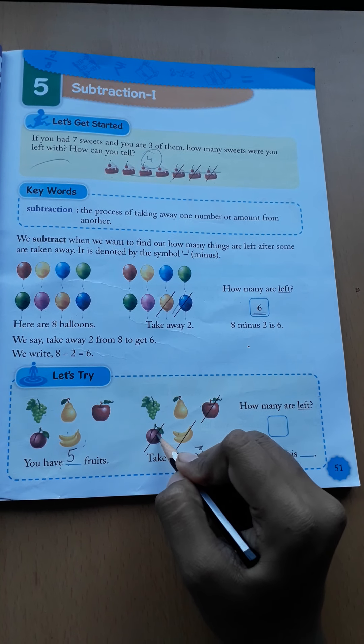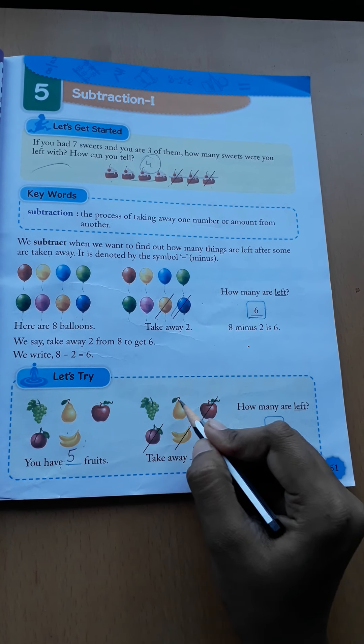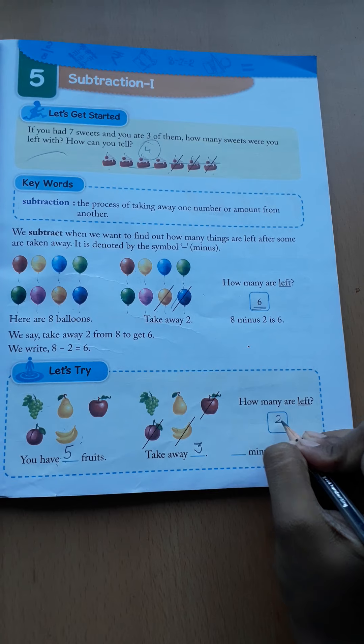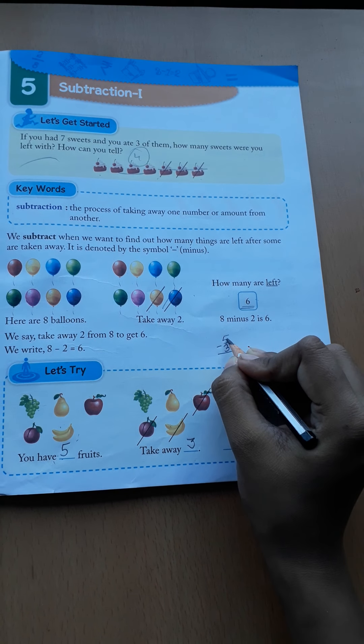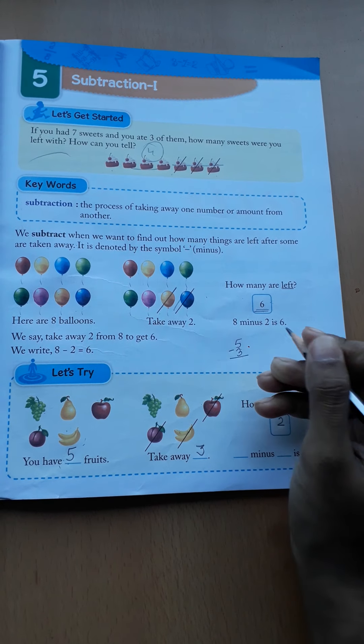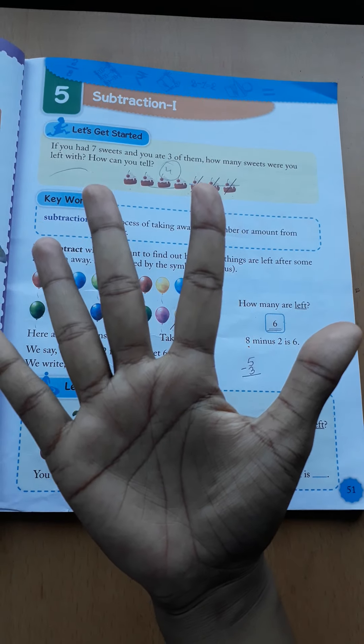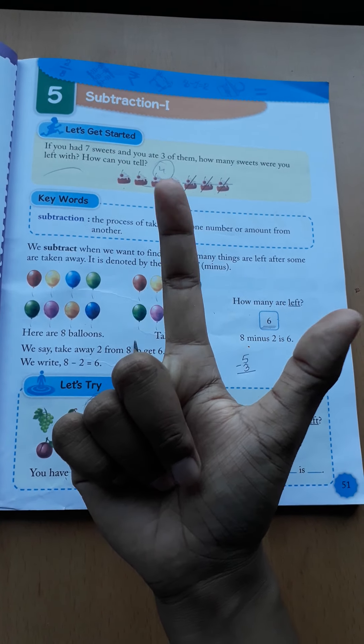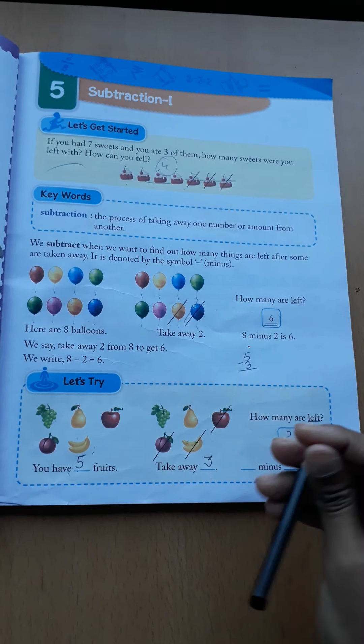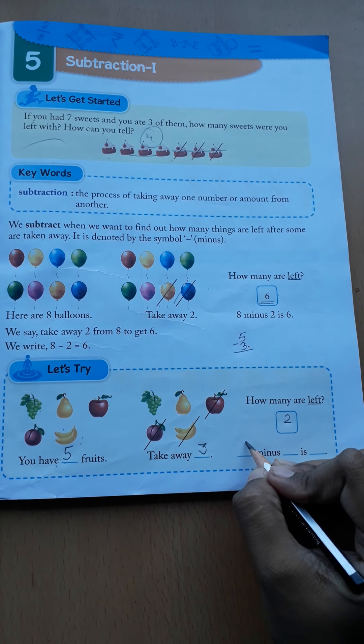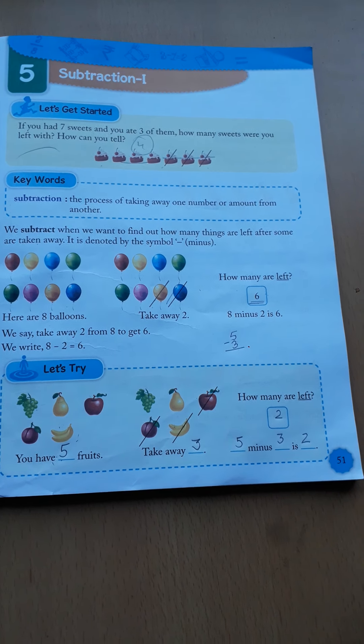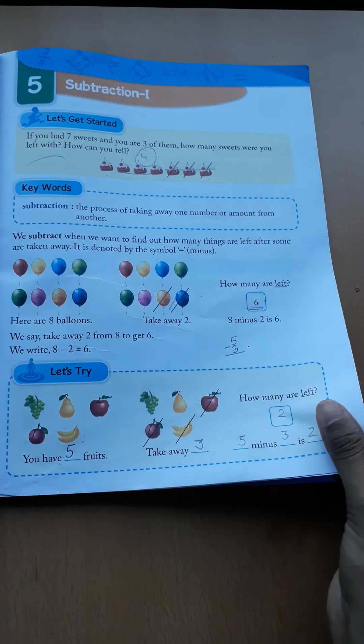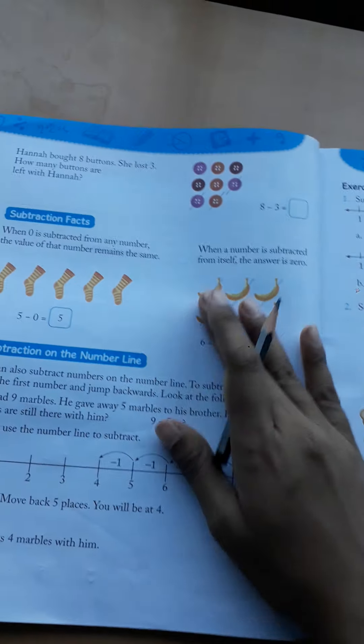One, two, three. So how much left? One, two. So if we minus 5 means out of 5, if we minus 3, we are left with - see, 5 we have minus 3. So we are left with 2. So what will come here? 5 minus 3 is 2. I think you get my point, right? Now see next question.